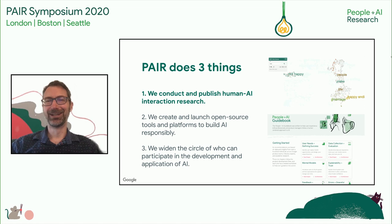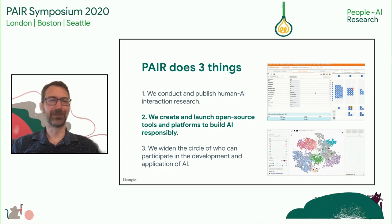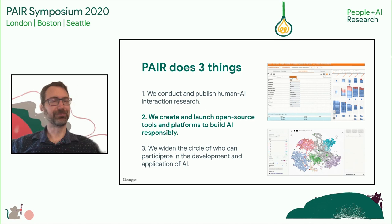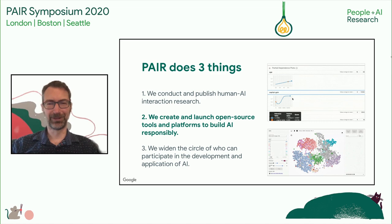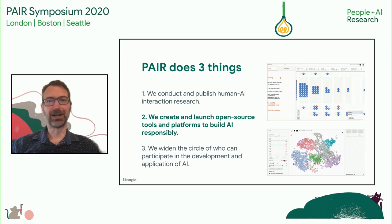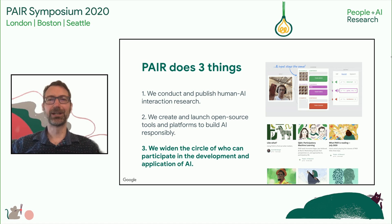We also create and launch open source tools and platforms. We build a lot of systems and try them out internally, but we don't just use them internally at Google — we try to make things public whenever we can. We think this is an important way to get ideas and tools out there. Finally, one of our big goals is to widen the circle of who can actually participate in the development of AI.